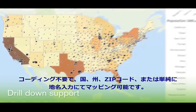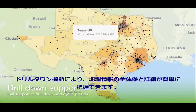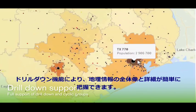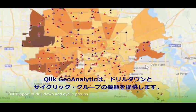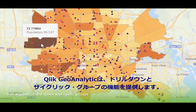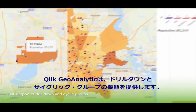Drilldown is a key ingredient in order to provide geographic overview and details. Qlik Geo Analytics has full support of drilldown and cyclic groups.